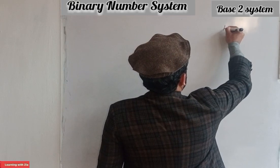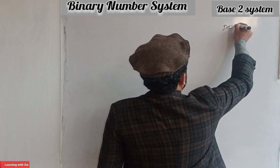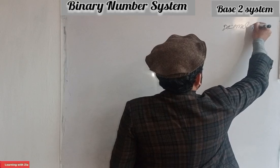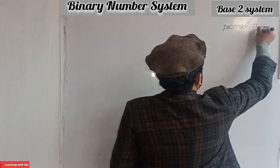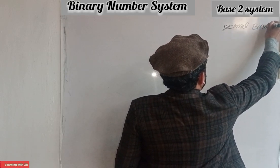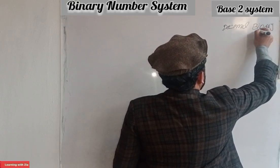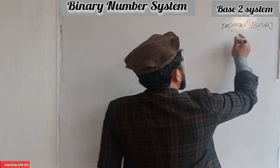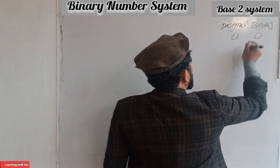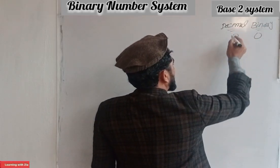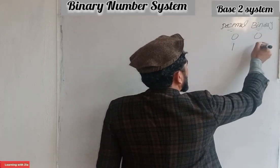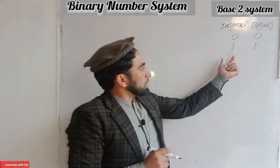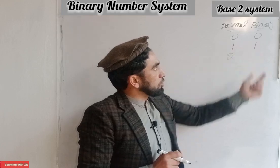Decimal and binary: decimal 0 in binary is 0. Decimal 1 in binary is 1. Decimal 2 in binary — two is equal to two in binary.